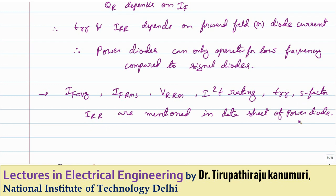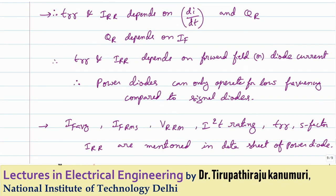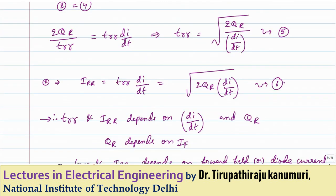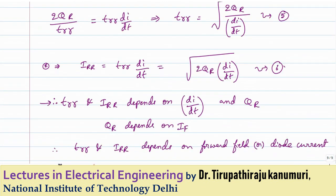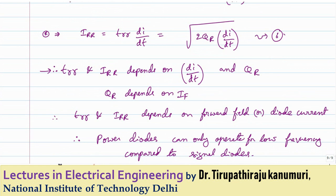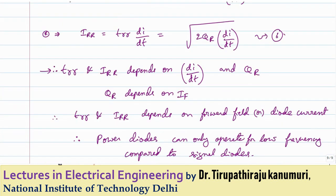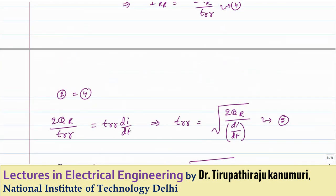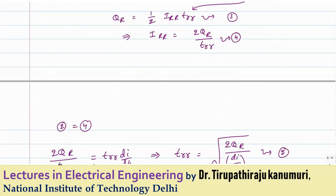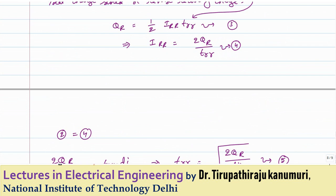These datasheet parameters must be considered while making a design. I hope the topics are now clear: what a power diode is, why three junctions are used, why it cannot be operated at higher frequencies, what modifications are required for high-frequency operation, and the different types of diodes. If you have any queries, please leave your comments in the comment section below. Thank you very much.